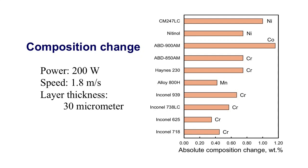The most volatile alloying element is chromium for most of the nickel alloys. However, for nitinol, which consists of only nickel and titanium, nickel is the most susceptible element to composition change because of its lower boiling point than titanium.